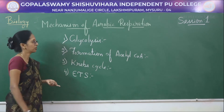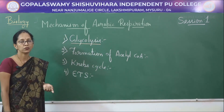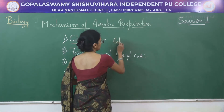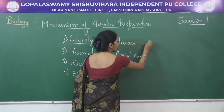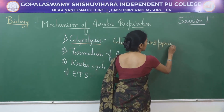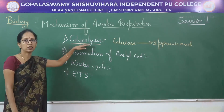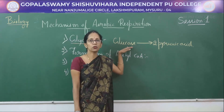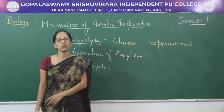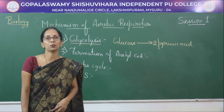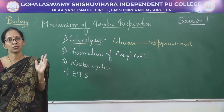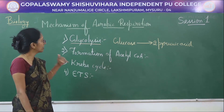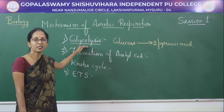First, coming to glycolysis. As the name itself indicates — glyco means glucose, lysis means splitting — the glucose is broken down into two molecules of pyruvic acid. Glycolysis takes place in the cytoplasm, in which a molecule of glucose is broken down into two molecules of pyruvic acid. It does not require oxygen, so it is considered the anaerobic part of aerobic respiration.